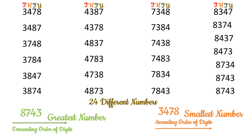So, can you tell which is the greatest and smallest number we can get from these digits? The greatest number is 8743 and the smallest is 3478. Think about the arrangement of the digits in both. Greatest number में हमेशा digits descending order में होते हैं, और smallest number में ascending order में होते हैं.